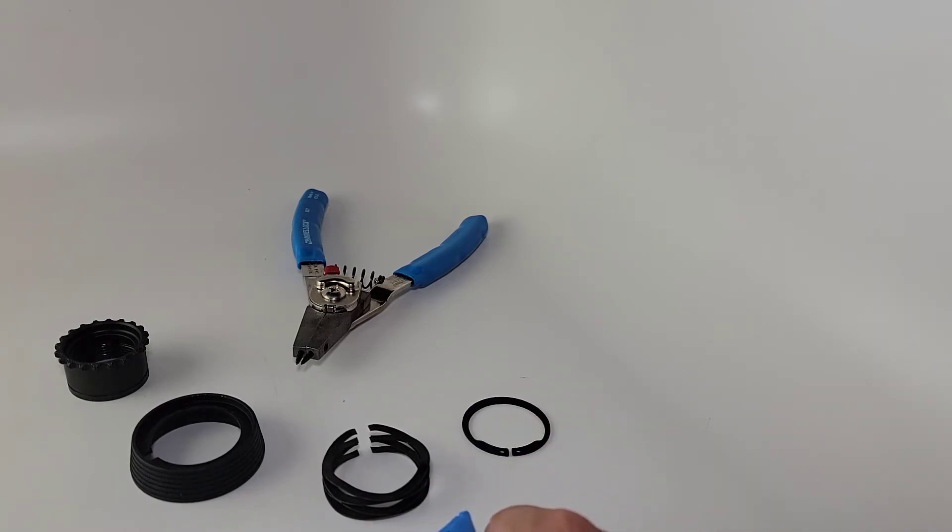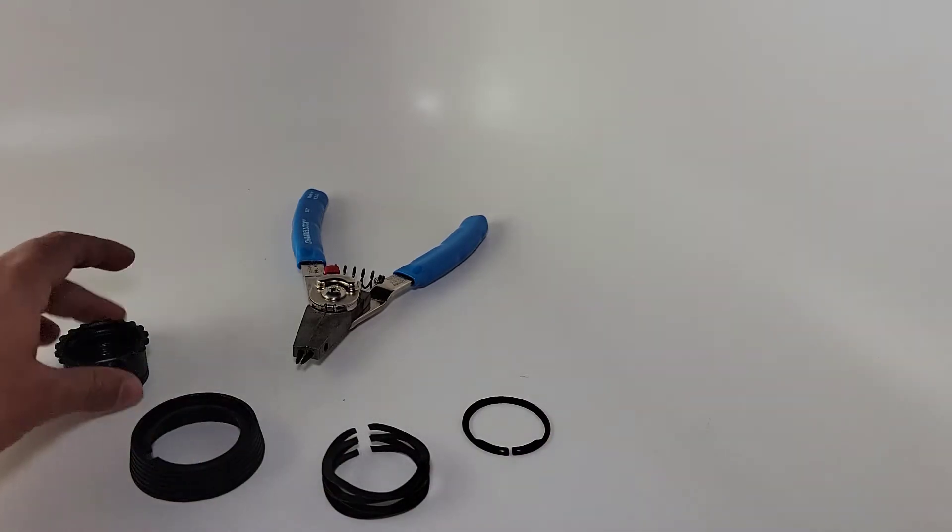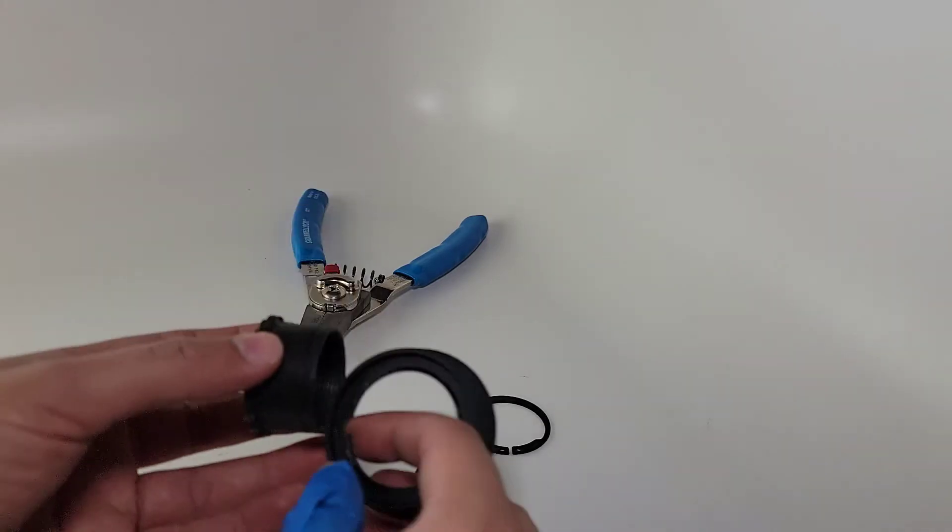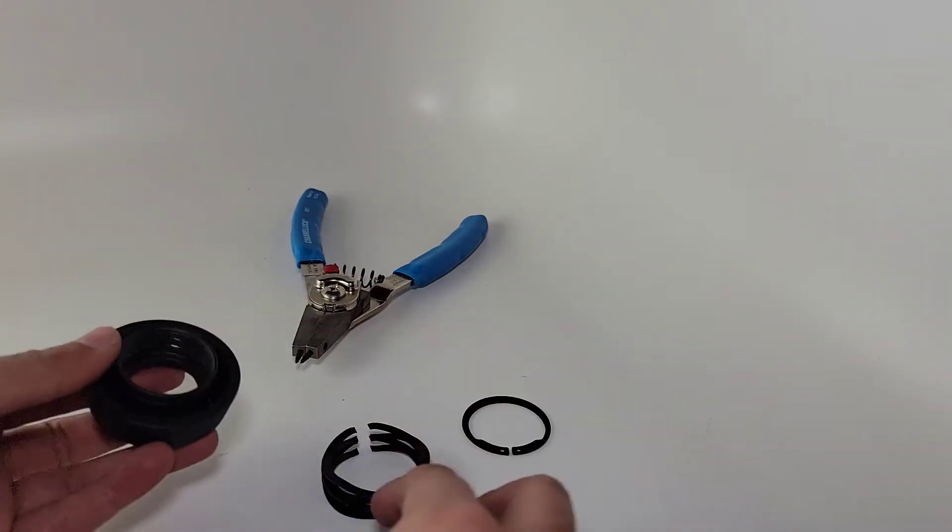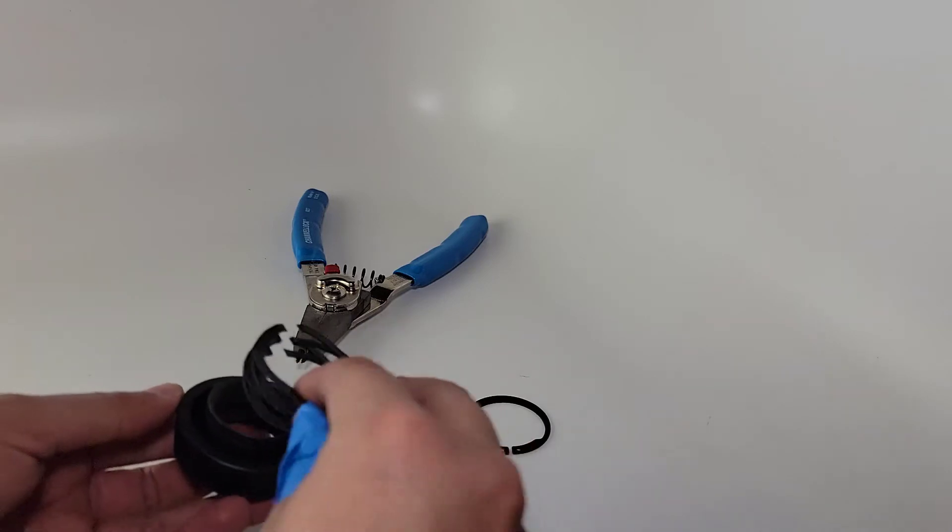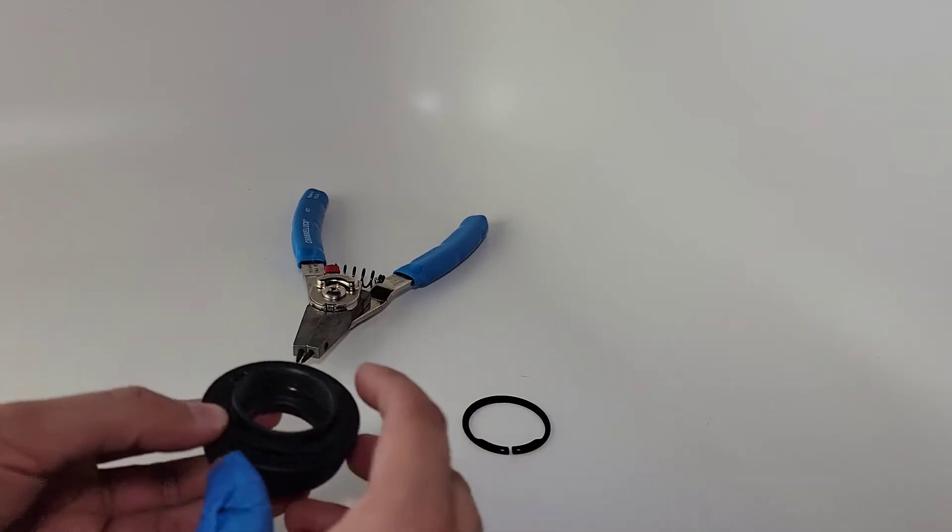We're going to assemble it in this order. Take the barrel nut, get the delta ring over that, then get the weld spring. It's going to drop right in there.